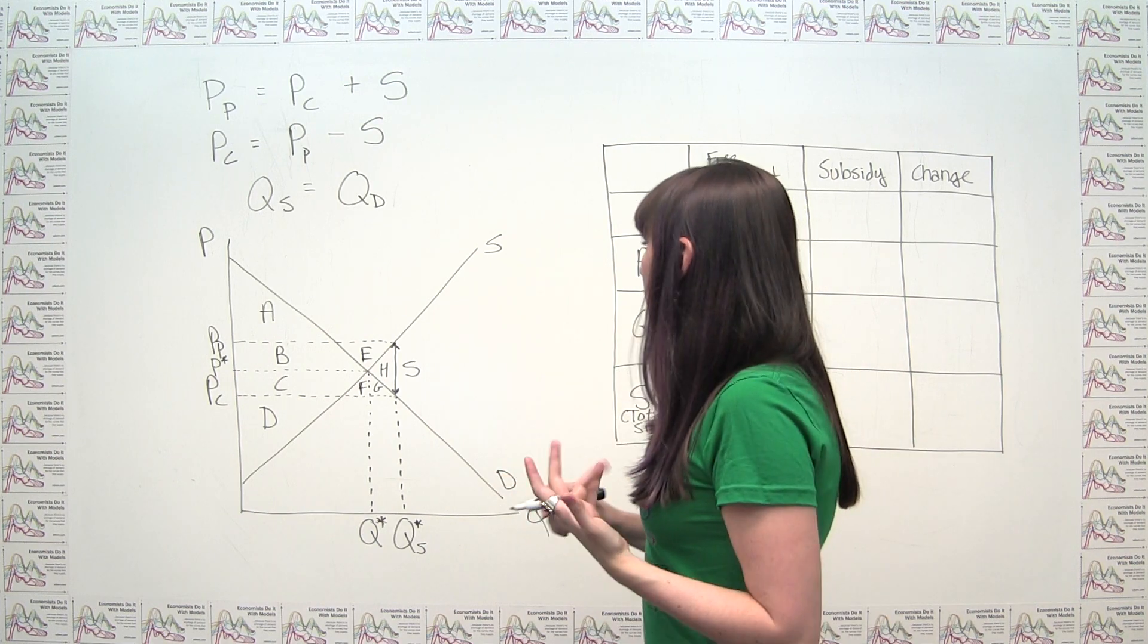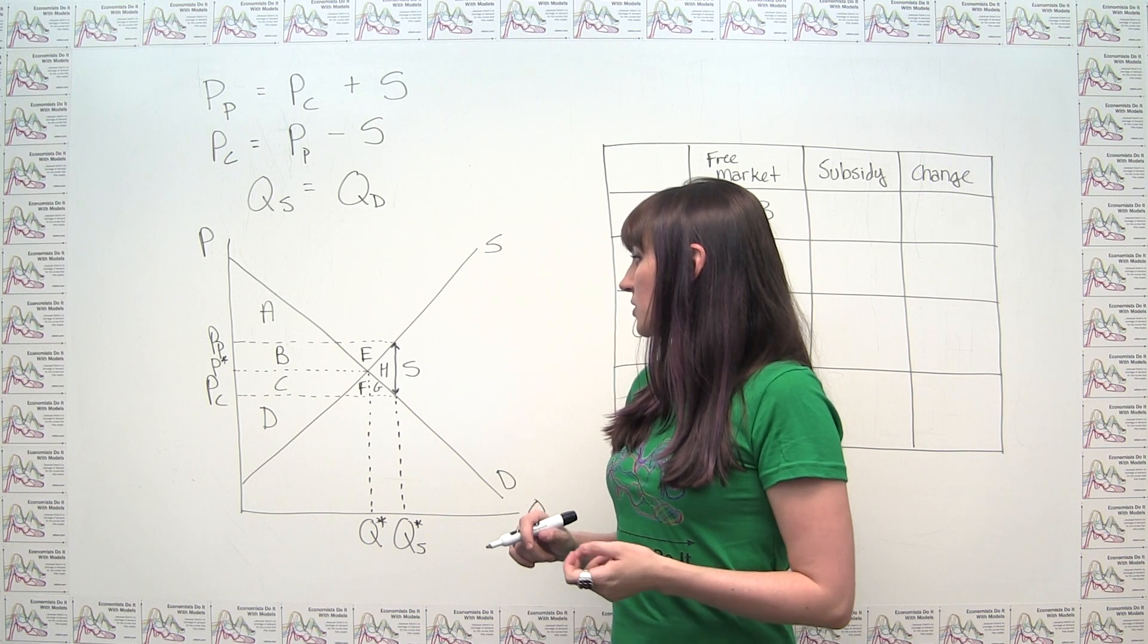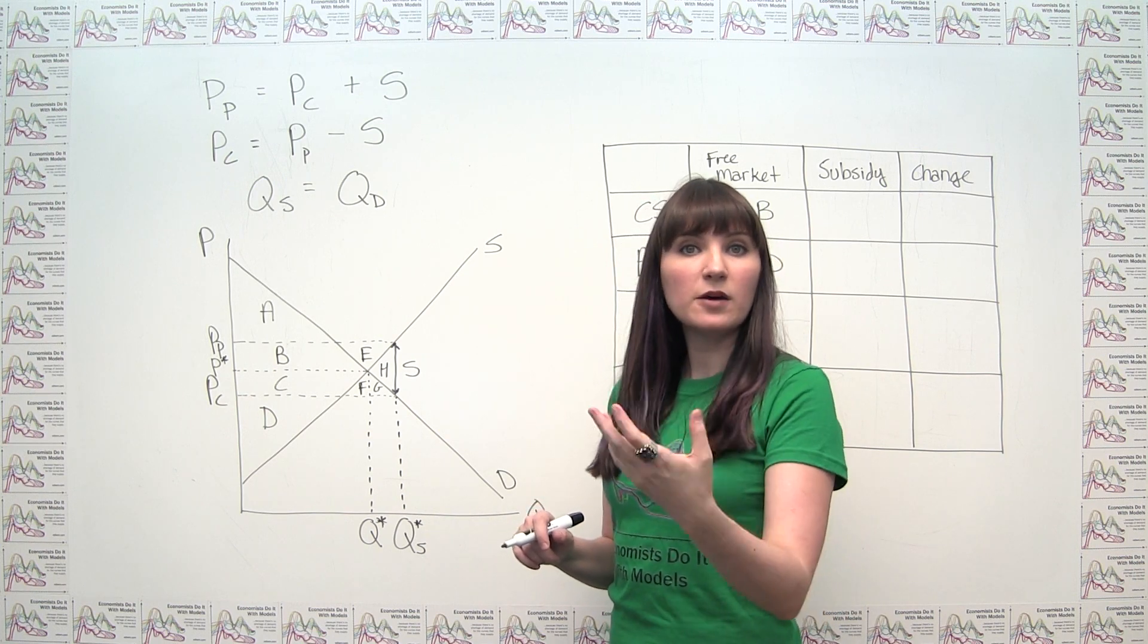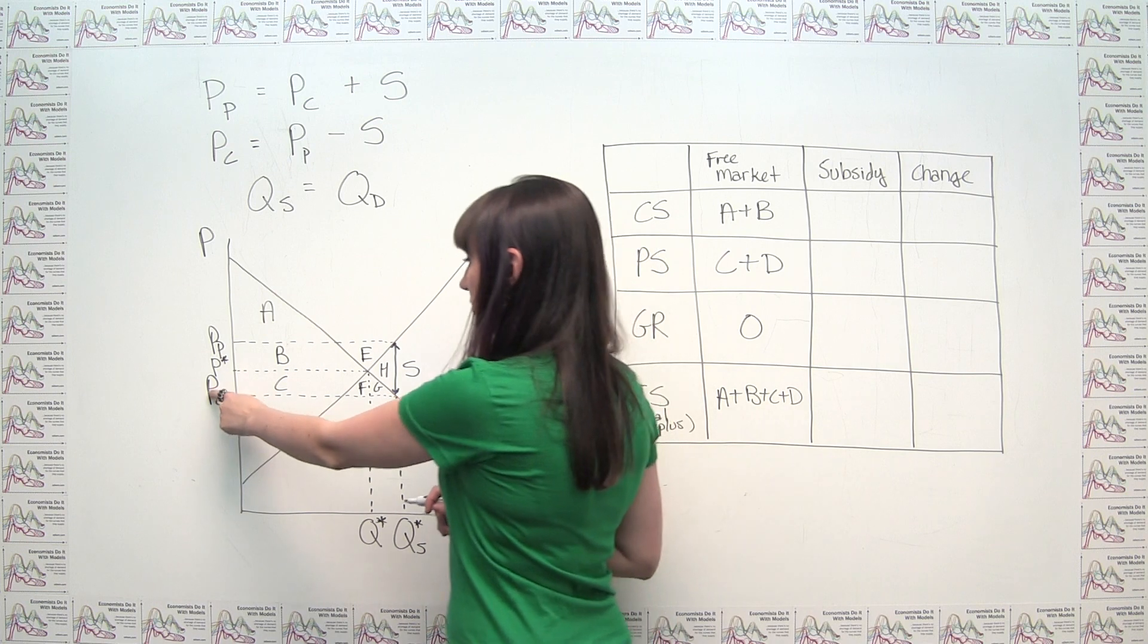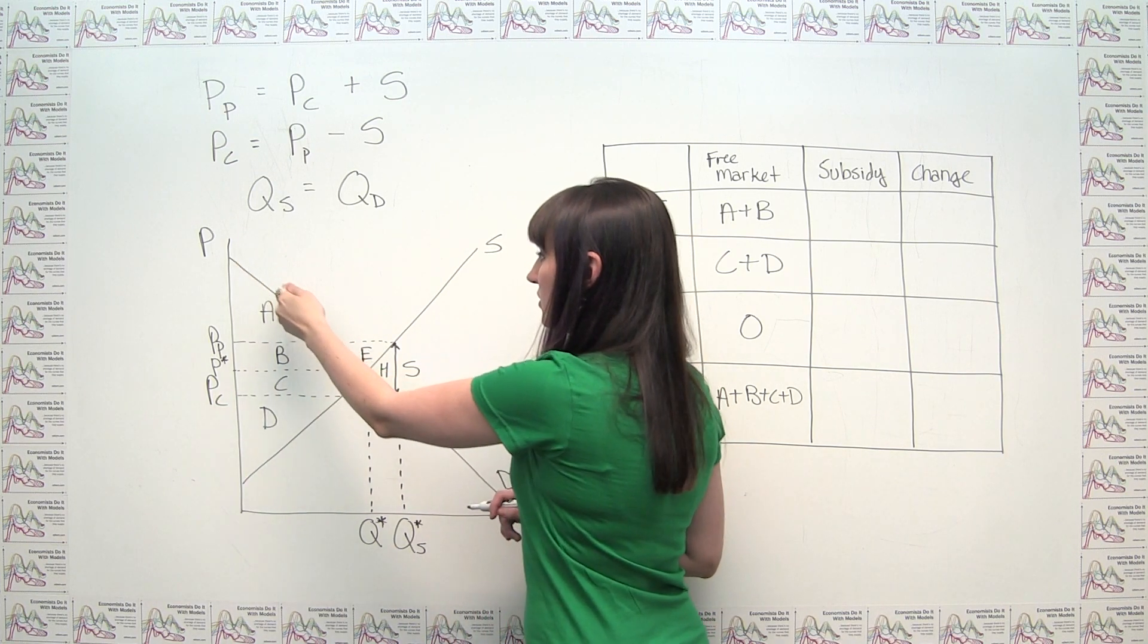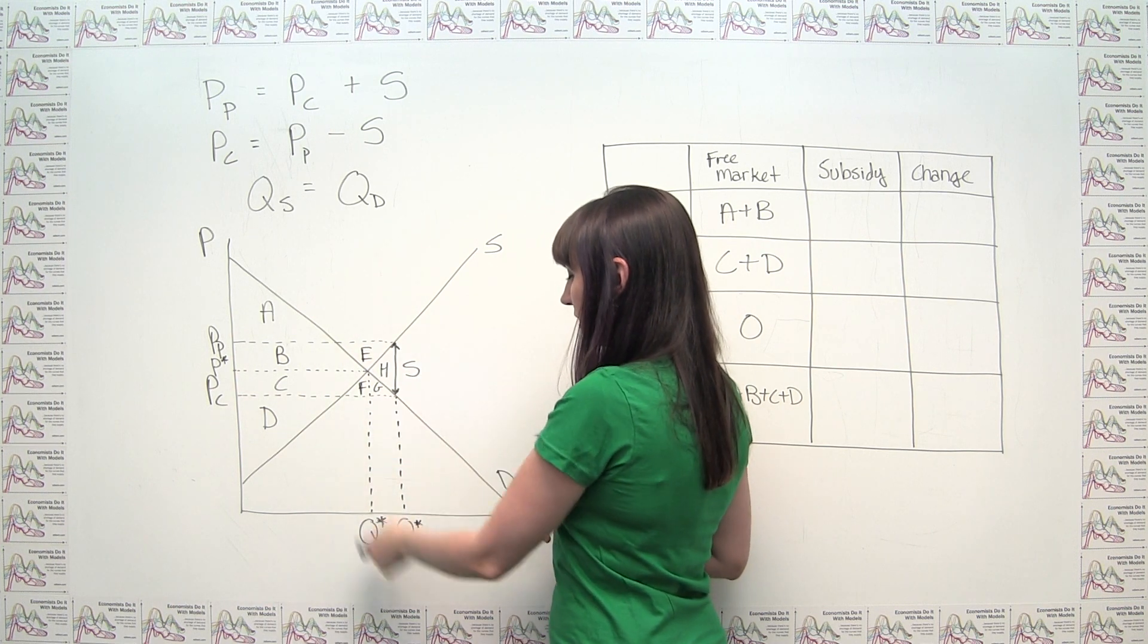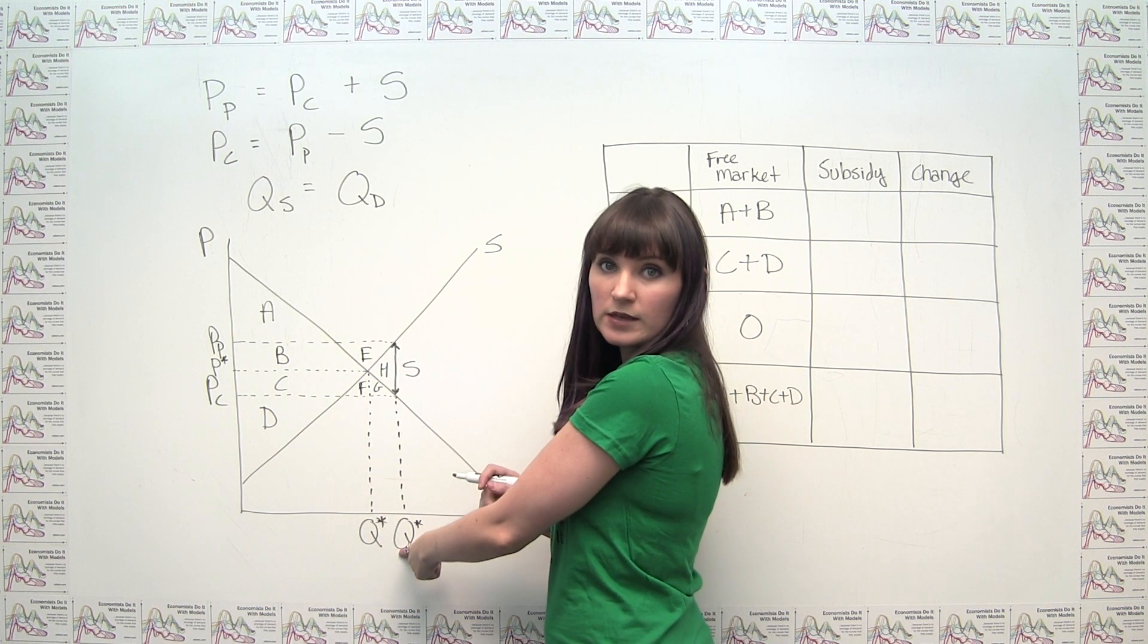So again, when we have the subsidy in place, we can say that consumer surplus is the area above the relevant price for the consumer, which is now here. So above here, below the demand curve, and to the left of the quantity that's being transacted, which is now this higher quantity here.